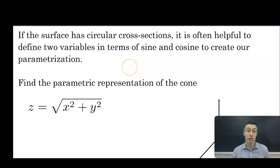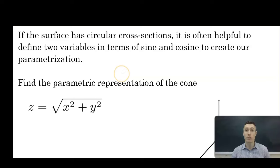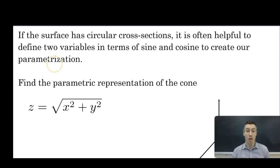If the surface has circular cross sections, it is often helpful to define two variables in terms of sine and cosine to create our parameterization. We saw this with the elliptic paraboloid. The cone and the sphere also have circular cross sections, so some sort of parameterization with sine and cosine is going to be helpful. We want to think like cylindrical and spherical coordinates, though those have three variables and we need only two.